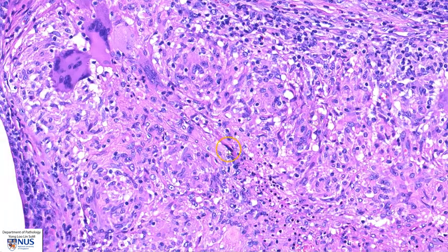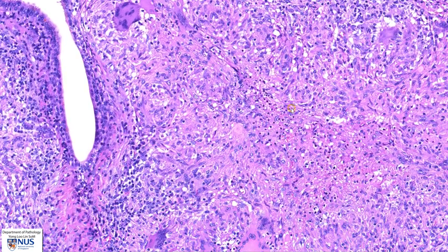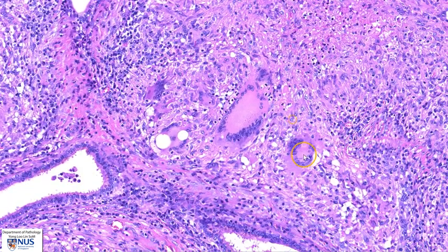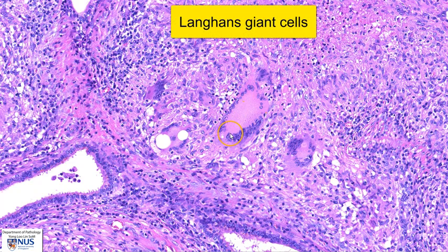If we move around, we can see numerous multi-nucleated giant cells. Some of these will have the nuclei arranged in a horseshoe configuration — for example, this one, as well as this cell here. These are known as Langhans giant cells. Langhans giant cells are frequently seen in TB; however, they are not specific for tuberculosis.